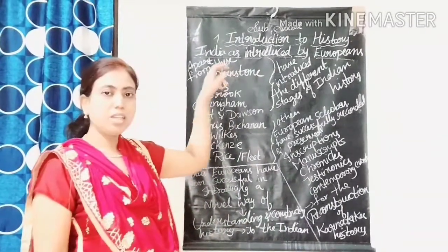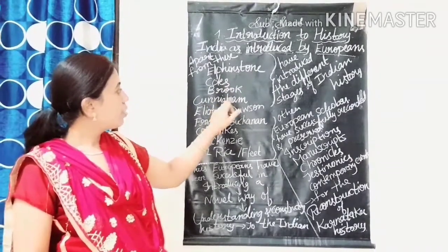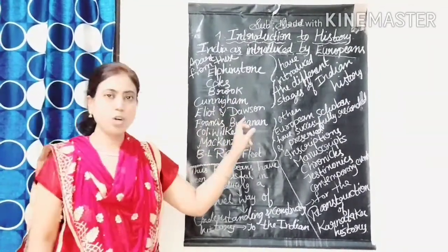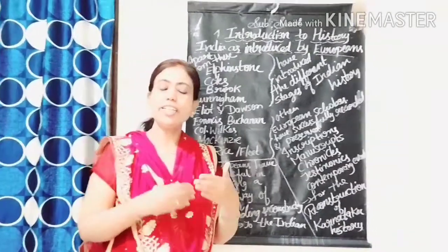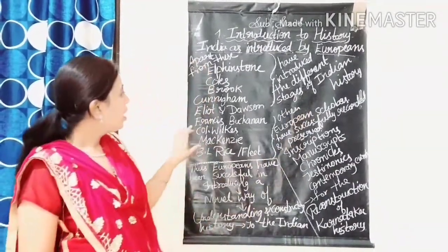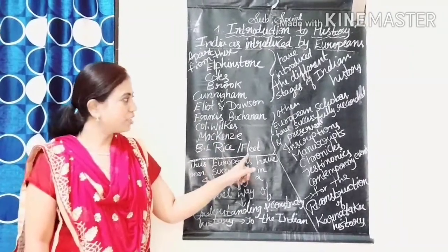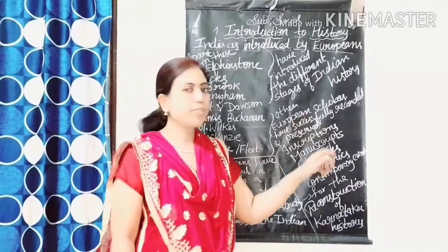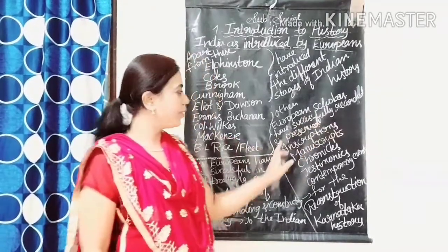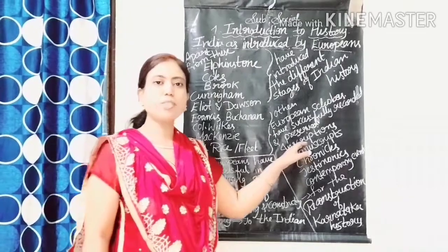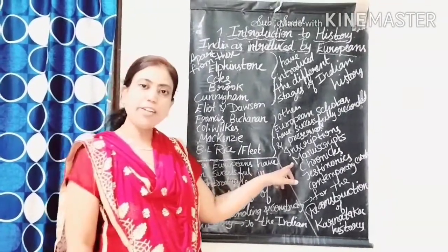Apart from these scholars like Max Müller and Abbé Dubois, others such as Elphinstone, Coles, Brooke, Cunningham, Elliot, and Dawson also introduced and helped construct the different stages of Indian history. Others including Francis Buchanan, Colonel Wilks, Mackenzie, B.L. Rice, and Fleet — these European scholars successfully recorded and preserved inscriptions, meaning writings on stone or metals, and manuscripts, meaning handwritten books or documents.